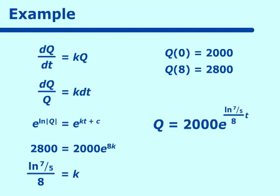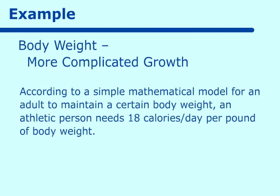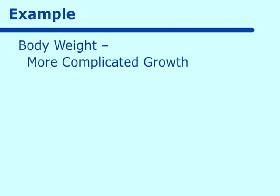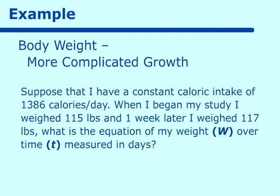This was quite simple. Let's go on to one that's more complicated, more like a Newton's law of cooling problem — a body weight growth-type problem. According to a simple mathematical model, for an adult to maintain a certain body weight, an athletic person needs 18 calories per day per pound of body weight. If the person consumes more or less, the weight will change at a rate proportional to the difference between the number of calories consumed and the number needed to maintain the current weight. Suppose that I have a constant caloric intake of 1,386 calories per day. When I began my study, I weighed 115 pounds, and one week later I weighed 117 pounds. What is the equation of my weight w over time t measured in days?